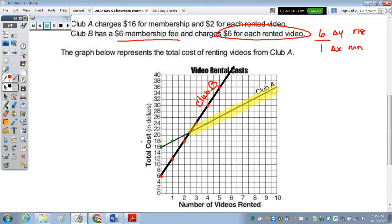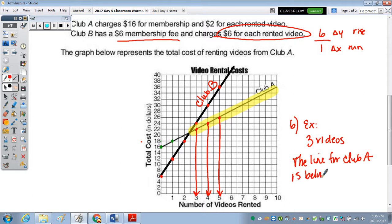So I'm going to say the first time it happens is right here at that point, which is for three. It could be four. Right? It could be five. But I'm going to put as an answer for part B, an example would be for three videos. And explain would be because the line for Club A is below the line for Club B.